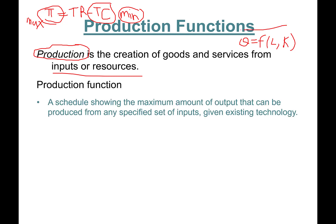A production function is literally a function, but once you plug in the values of labor and capital, you get quantity. It's a schedule showing the maximum amount of output Q that can be produced from any specified set of labor and capital given existing technology.